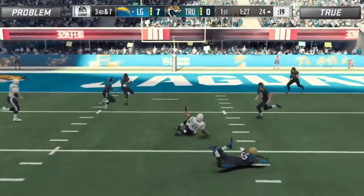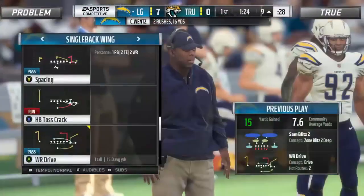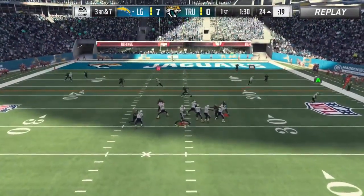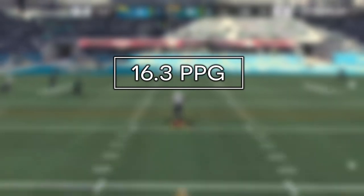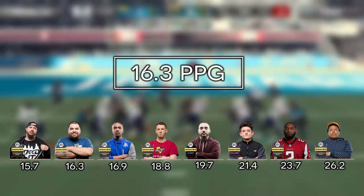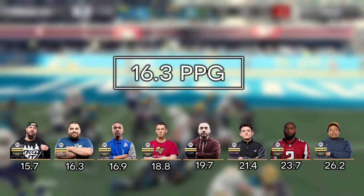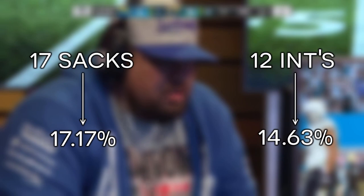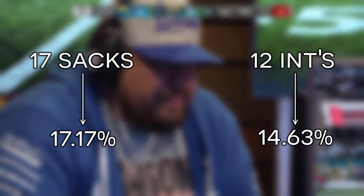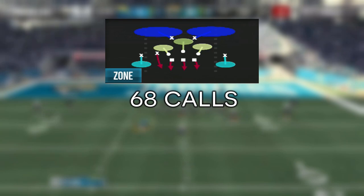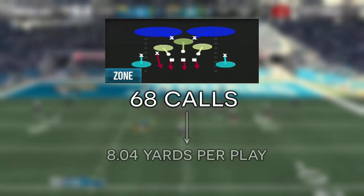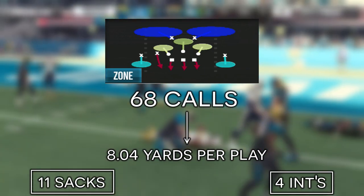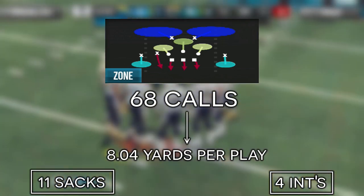Defensively, he was one of the very few players who actually alternated schemes, switching back and forth between a primarily Dollar approach and then a Nickel 335. He ended up allowing only 16.3 points per game, good for second best in the entire conference. He also shined in his ability to both get pressure on the quarterback and take the ball away, where he was able to get 17 sacks and force 12 interceptions. 335 Tampa 2 ended up being his most called coverage with 68 calls, where he averaged giving up a little over 8 yards per play. Where he thrived with this play in particular was by being able to amass 11 of his 17 total sacks and 4 of his 12 interceptions.